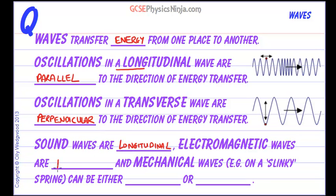Electromagnetic waves are transverse. Electromagnetic waves are waves like light and infrared heat, for example. They can travel through a vacuum, so they don't need any material to travel through. They're transverse waves, which means they oscillate at right angles to the direction of the wave energy motion.